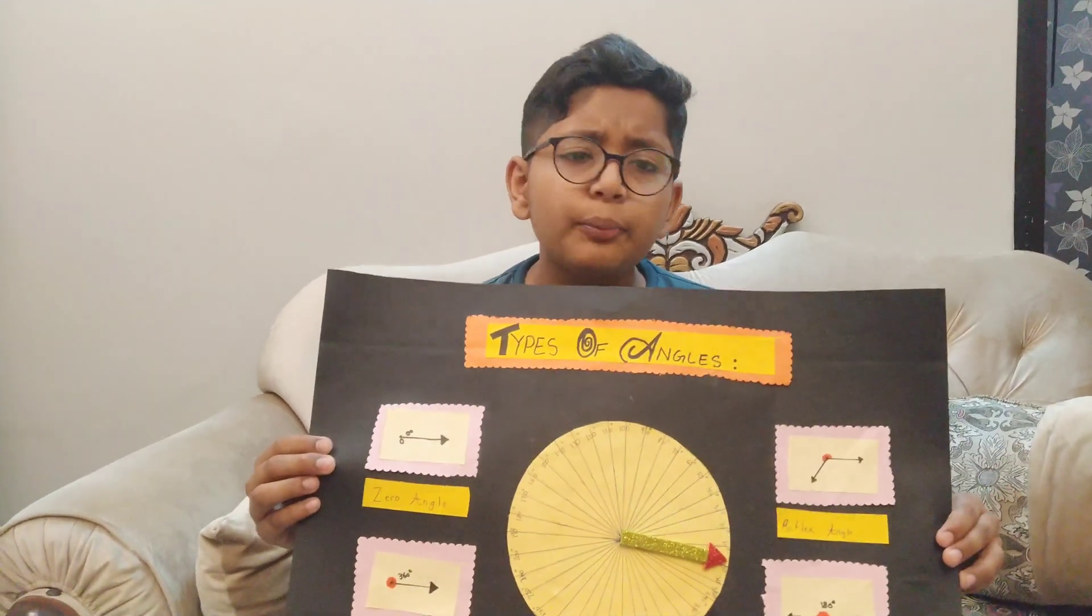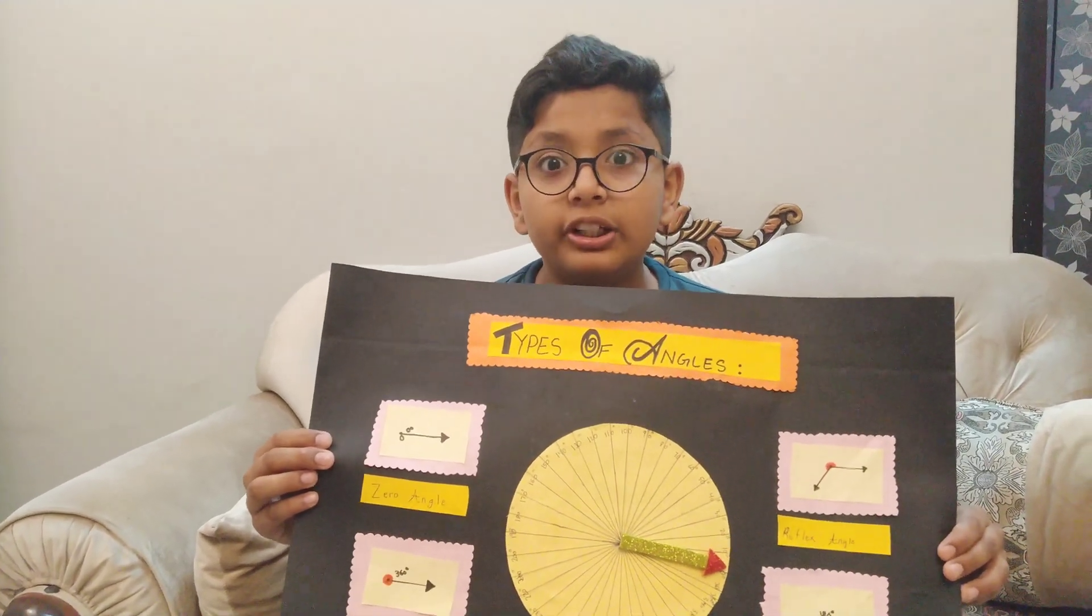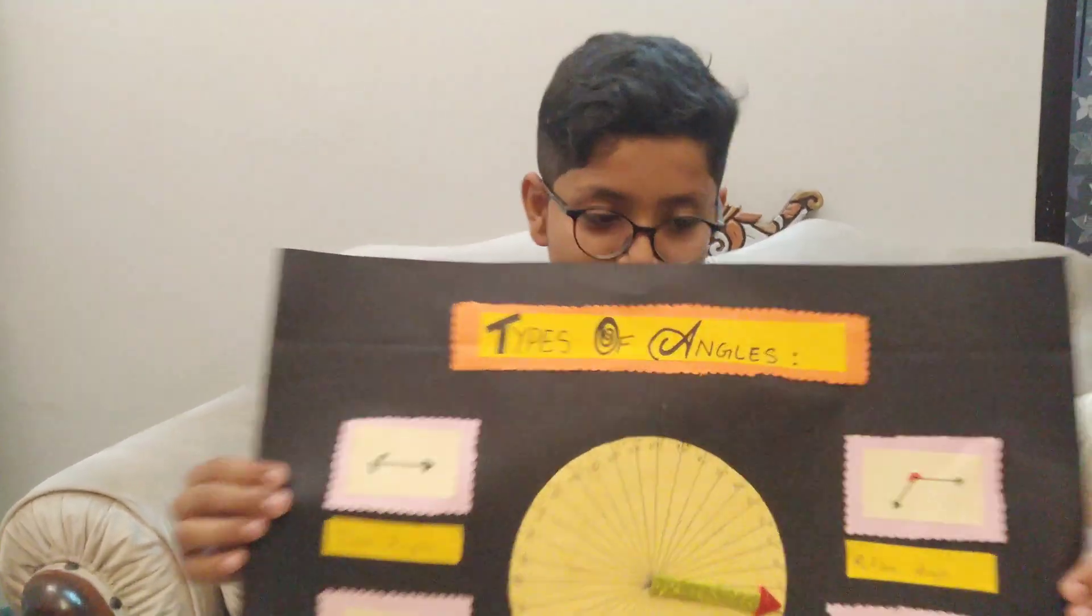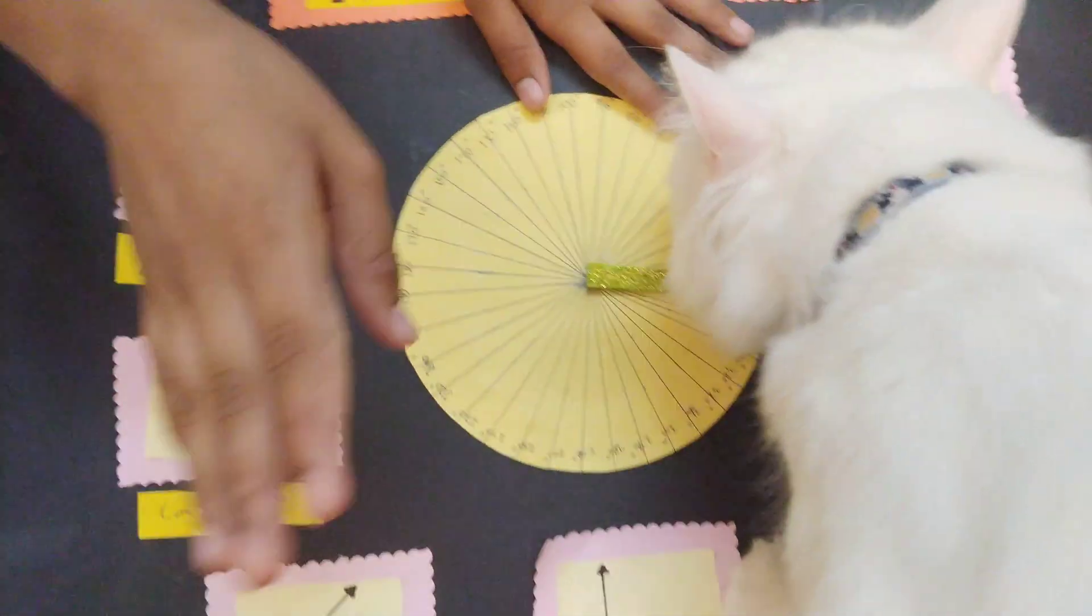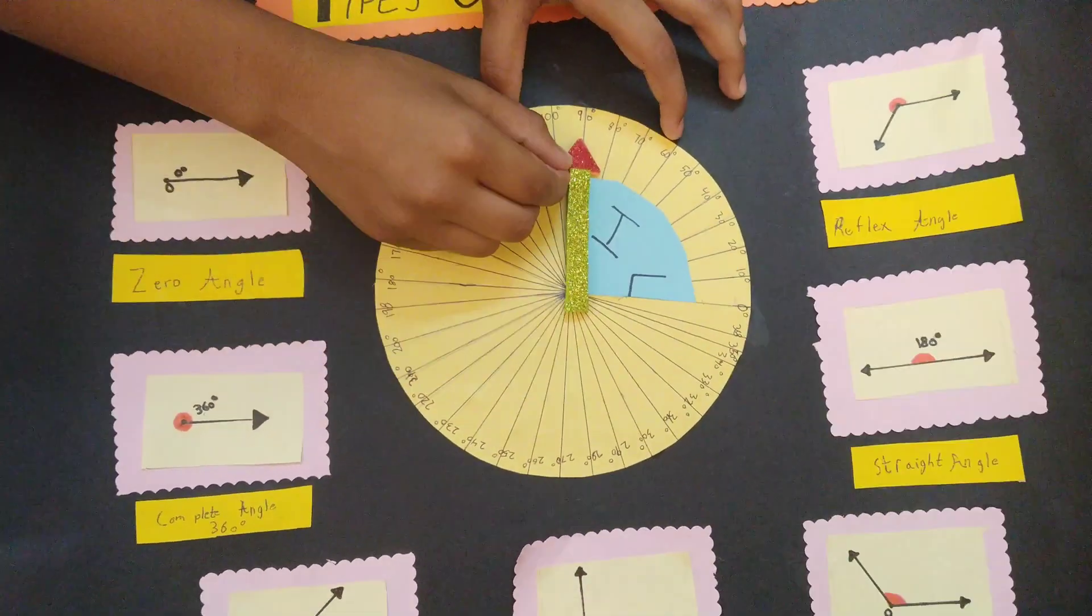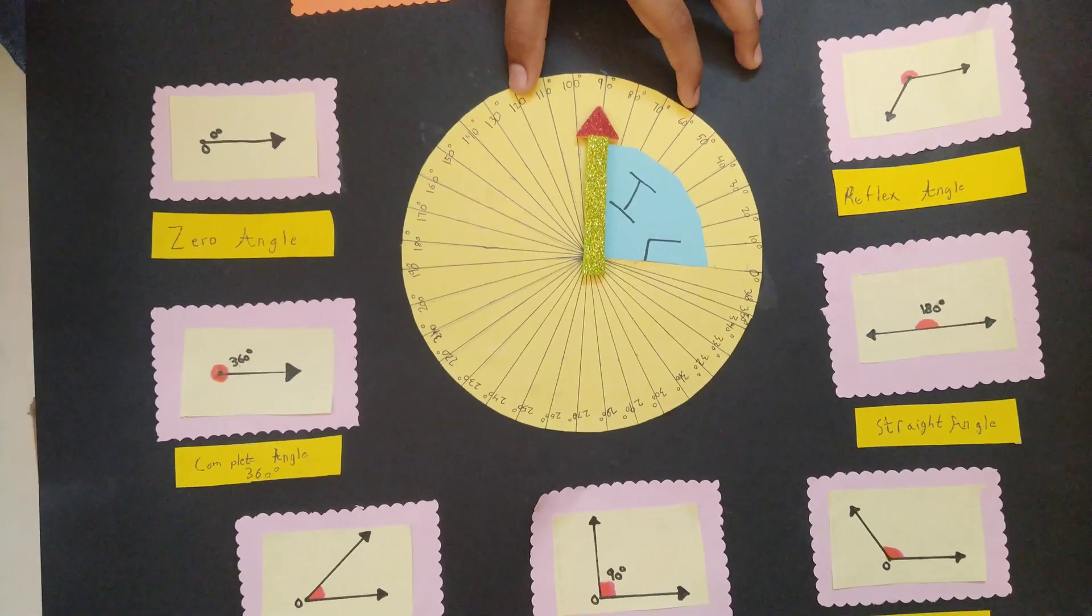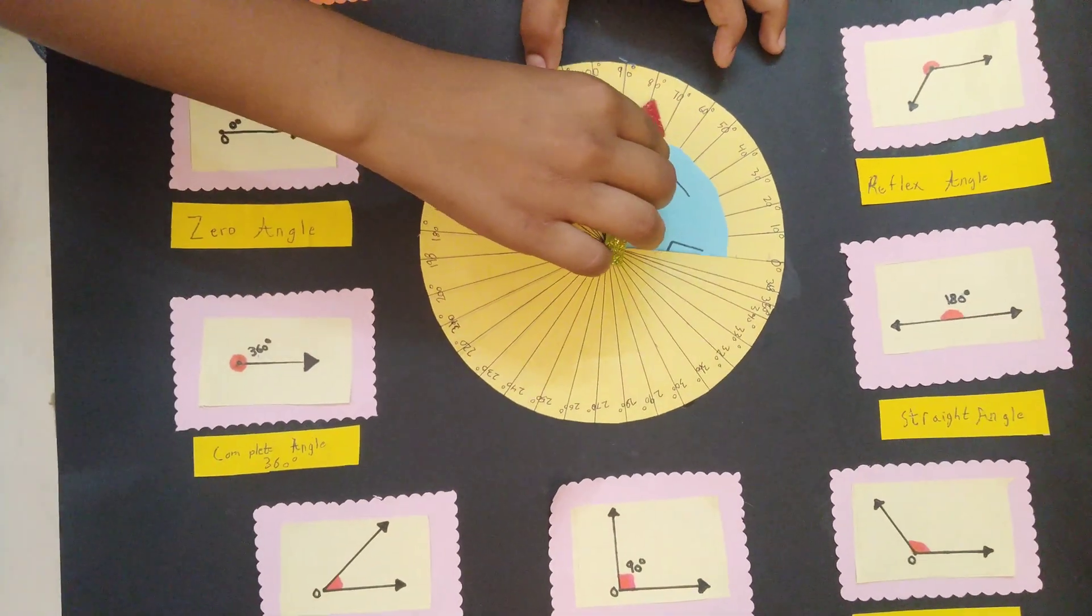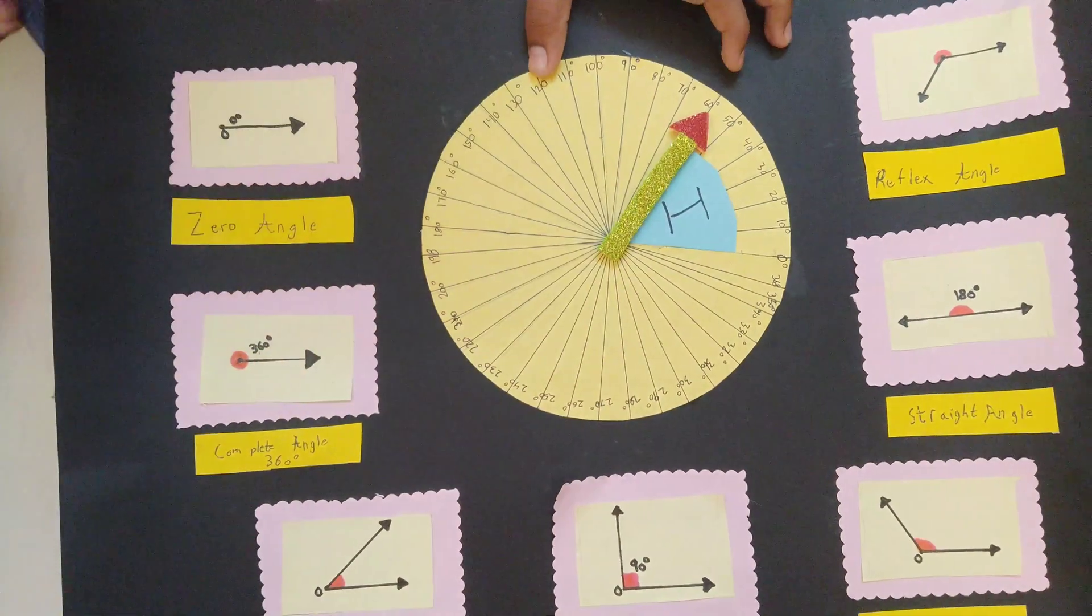So now it's time to show how our working model really works. So now let's see. Let's just think you want to find out any angle. You can see from this 90 degrees we have a right angle on 90 degrees. Then lesser than 90, 60 can be, and this is an acute angle.